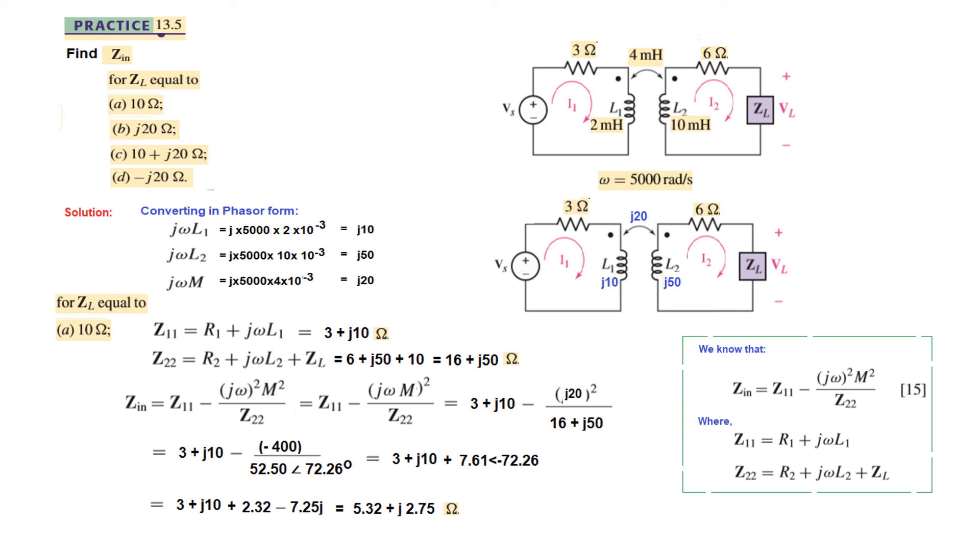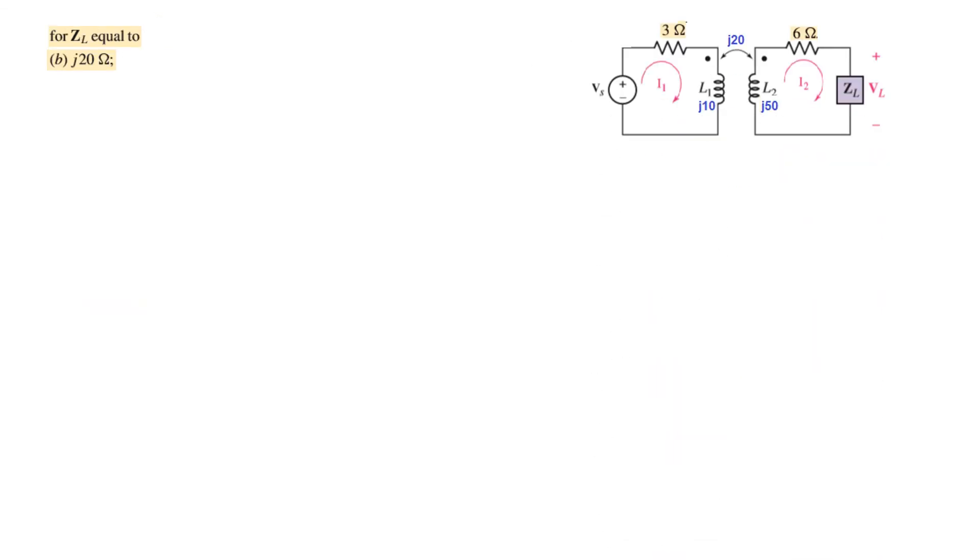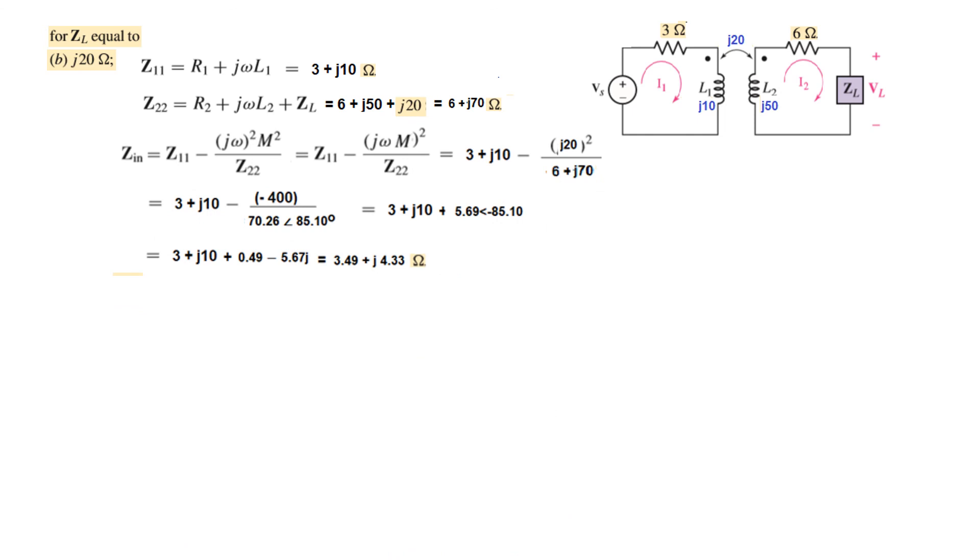In the same way, we will find Zin for ZL equal to j20. Z11 remains unchanged. Z22 changes because ZL has a new value of j20. We find Z22 and then plug in the values following the same steps. Keep solving to get the final answer.